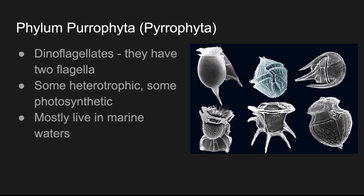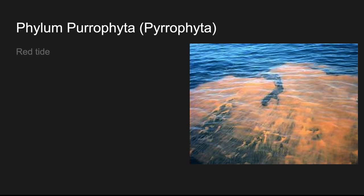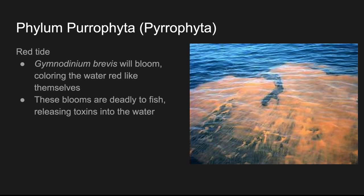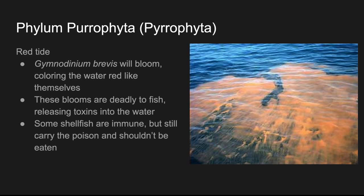They mostly live in marine waters — that would be ocean waters. Here is a picture of a red tide. A red tide is caused when Gymnodinium brevis algae will bloom. Remember, an algal bloom is when algae growth just overwhelms an environment and it will color the water red. These blooms are deadly to fish because they release toxins into the water. Some shellfish are immune to red tides, but still they carry the poison and shouldn't be eaten. If there's some shellfish that lived through a red tide, it would have ingested those poisons, and if you were to eat that shellfish, you'd get contaminated with that poison as well.